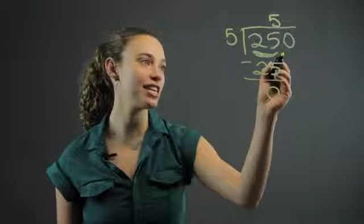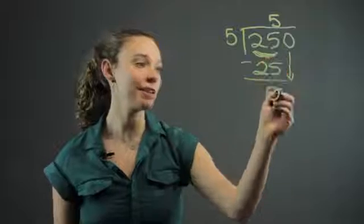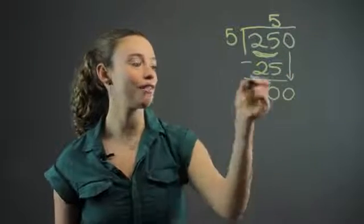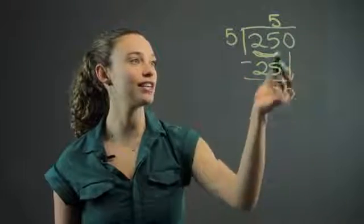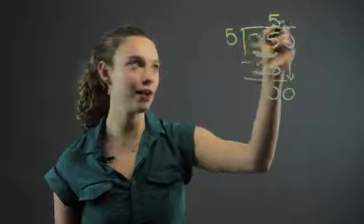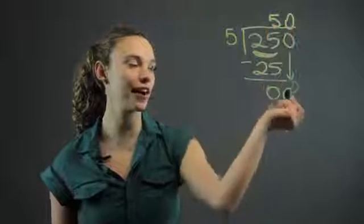Then you have to bring down the next number. The next number is 0. So 5 goes into 0, 0 times. You put the 0, this next number, right above the 0.